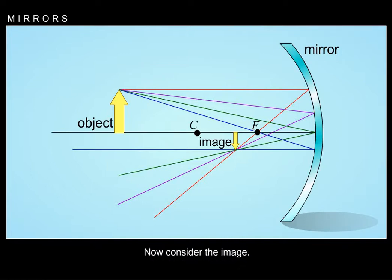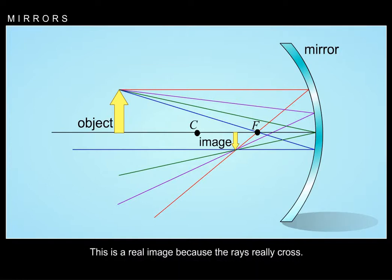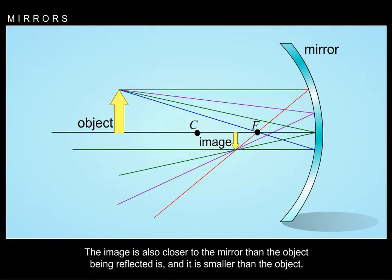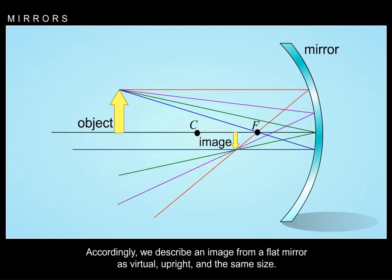Now consider the image. In this case, all the rays really do cross, and if we put a screen at the point of crossing, we could focus the image there. This is a real image because the rays really cross. Notice that the image is upside down or inverted — a general property of real images formed by a single optical element. The image is also closer to the mirror than the object and smaller than the object. Thus, such an image is described as real, inverted, and smaller. Accordingly, an image from a flat mirror is described as virtual, upright, and the same size.